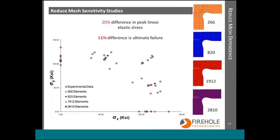Here I have a quasi-isotropic cruciform specimen with four different mesh densities ranging from 256 elements to 2,800 elements. The peak difference in linear elastic stress between the fine mesh and the coarse mesh was 20 percent. But the peak ultimate failure prediction and the highest ultimate failure prediction in any of these load cases was only 11 percent, and you can see that's well within the scatter of the experimental data.